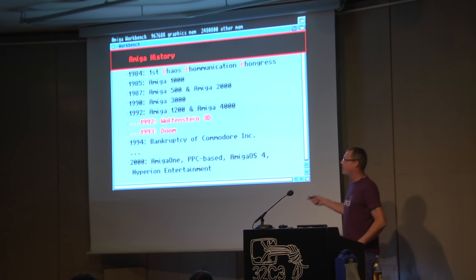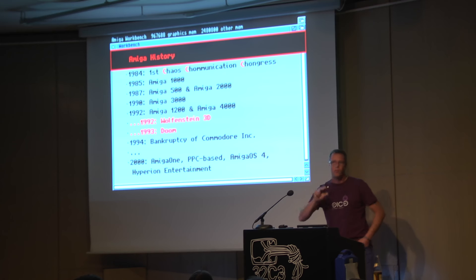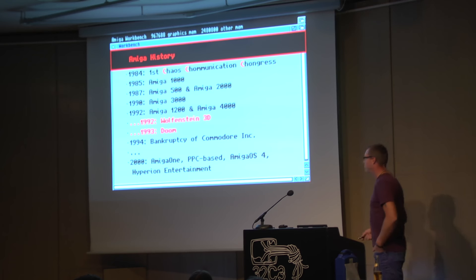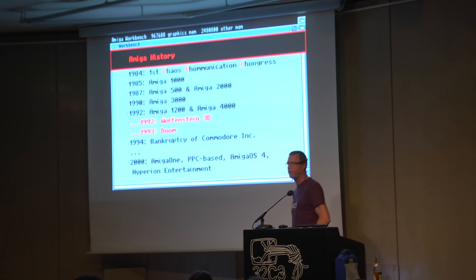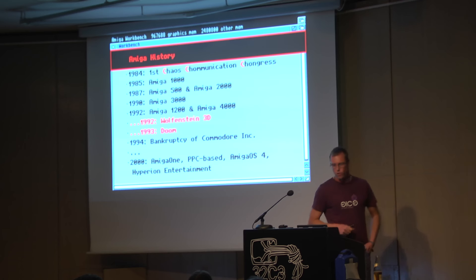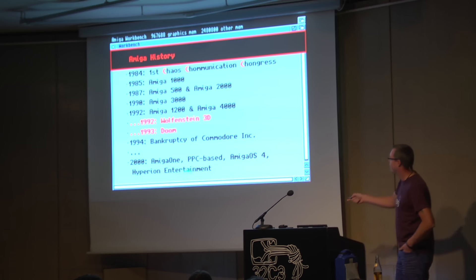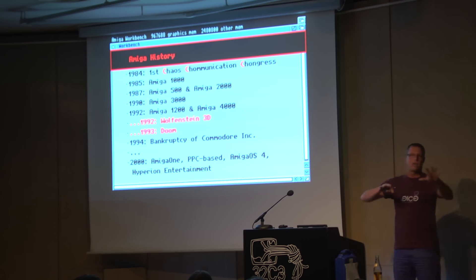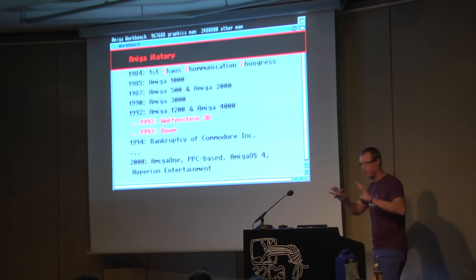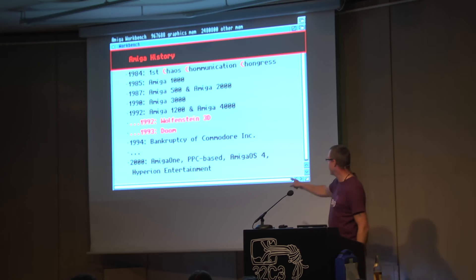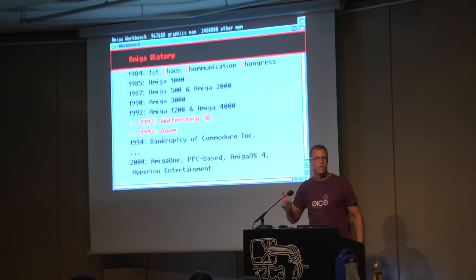But the Amiga didn't die — there is further history. There is the Amiga One, which is PowerPC-based and has AmigaOS version 4, further developed by companies including Hyperion Entertainment. The license was sold from one company to the next, and so on. It's still alive; the last version of AmigaOS 4 was released, I think, in 2014.